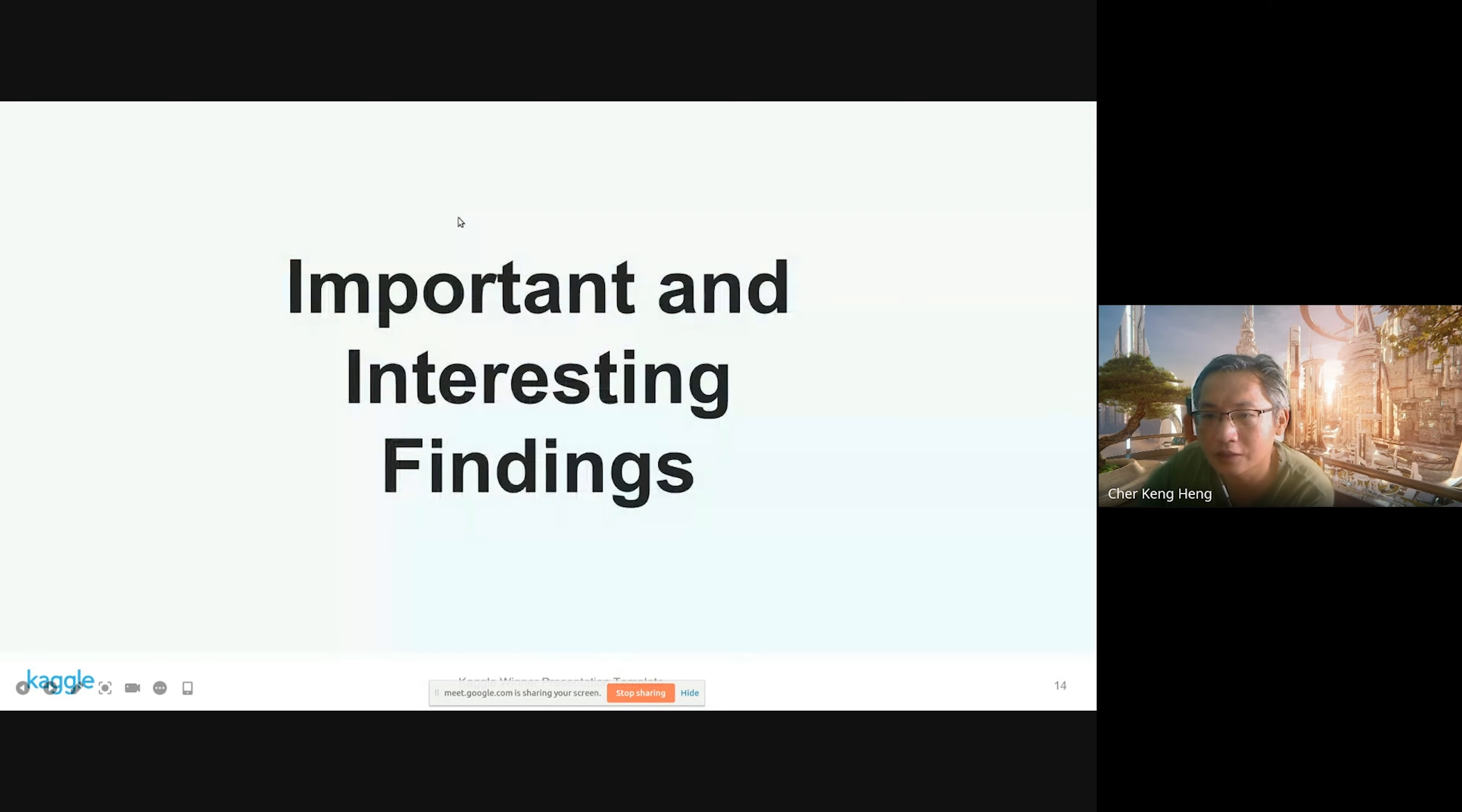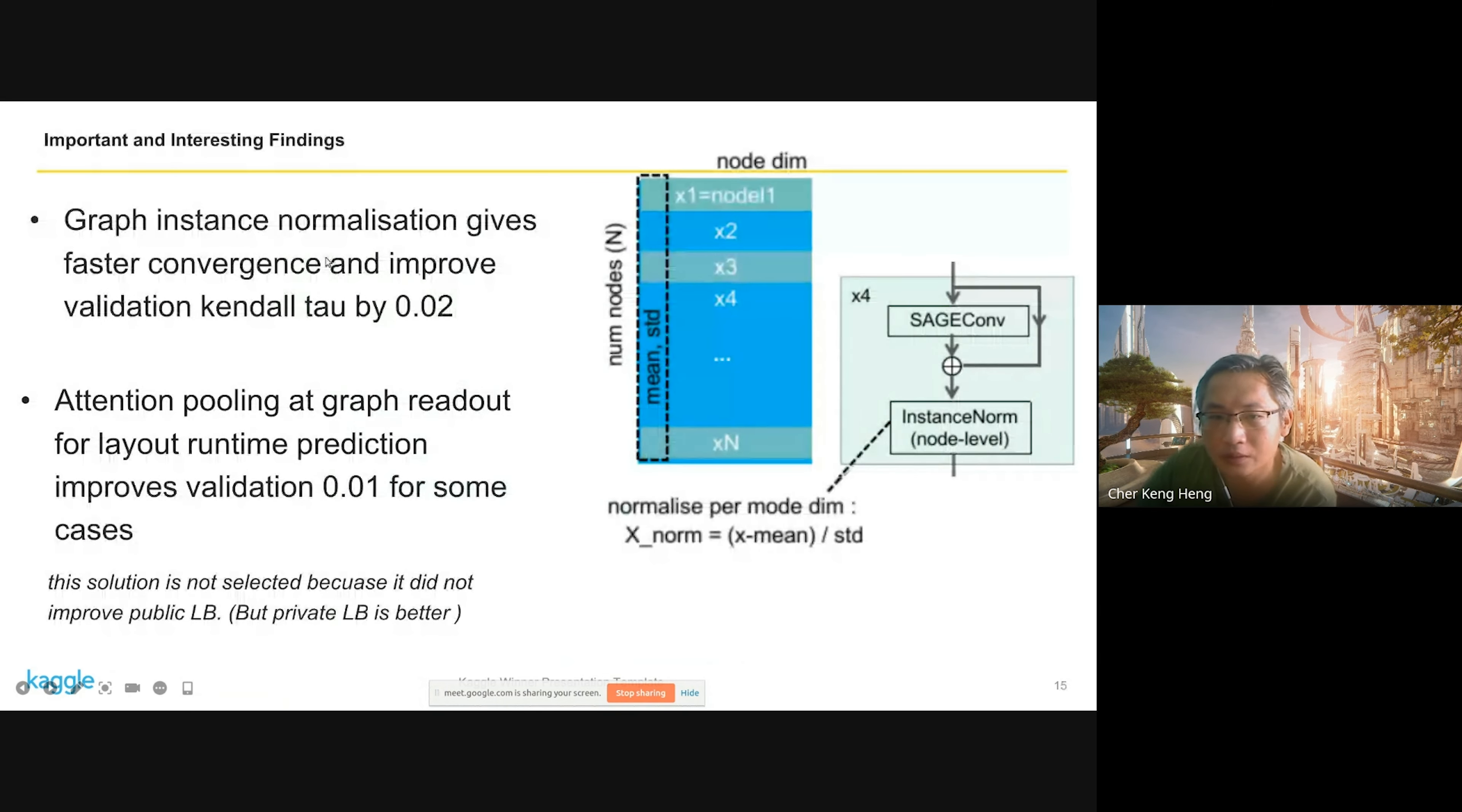For interesting findings, graph instance normalization actually improved results by 0.02. Without this normalization, not all configurations work, but once I put this in, it seems any configuration will work. There's something I didn't try because of time. Attention at the readout seems to improve results for some cases, not all cases. This solution is not selected because it didn't improve my public leaderboard but it does improve my private leaderboard.